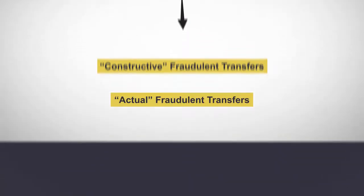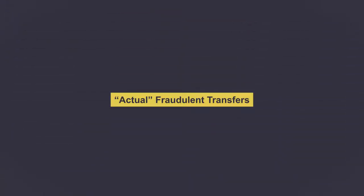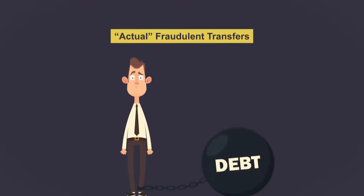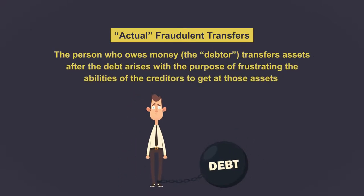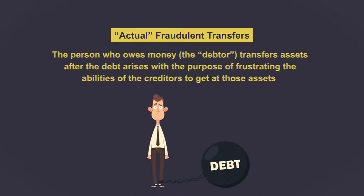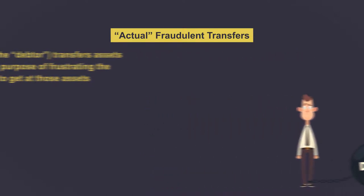Starting with actual fraudulent transfers: the most common types occur when the person who owes money — the debtor — transfers assets after the debt arises, with the purpose of frustrating the abilities of the creditors to get at those assets.